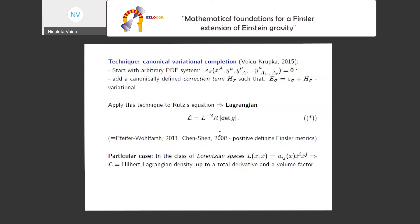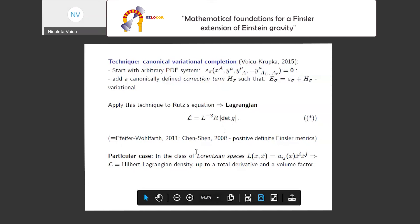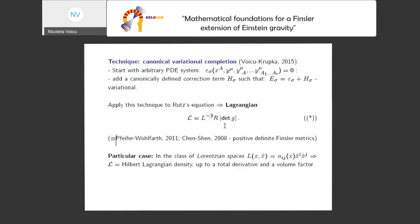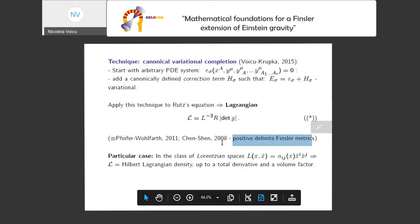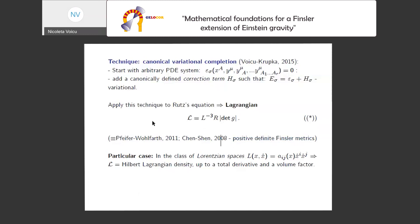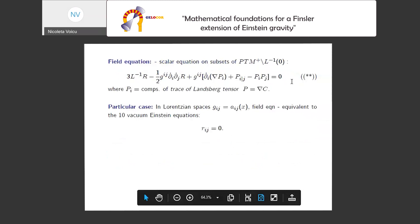The Lagrangian is given by the function marked by star. Remarkably, this was the one found by intuition by Pfeifer and Wohlfarth in 2011, and the same as found by Chen-Chen for positive definite Finsler metrics — though positive definite Finsler metrics are way simpler. So it was somehow found by intuition before, but now we have confirmed it with a solid background: this is the simplest scalar you can have in Finsler gravity.